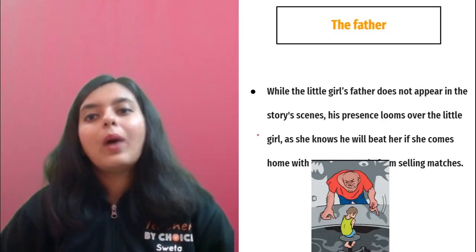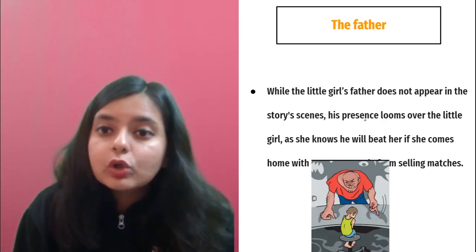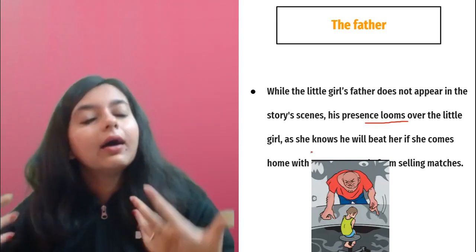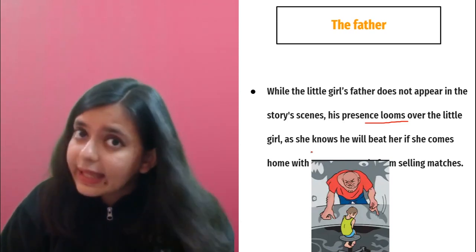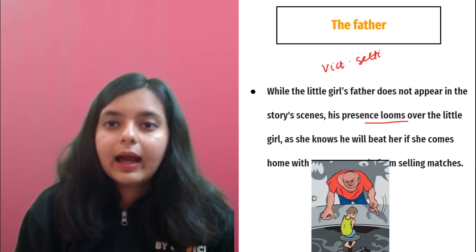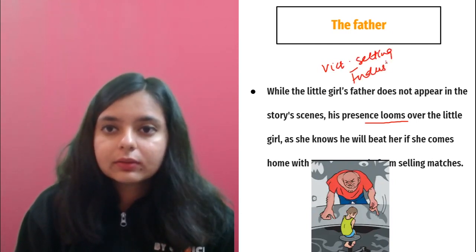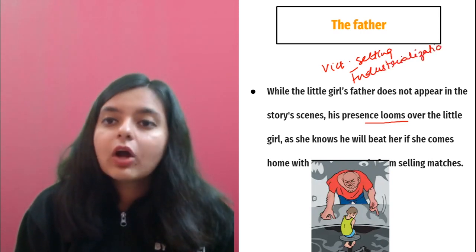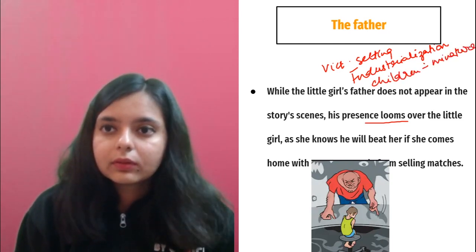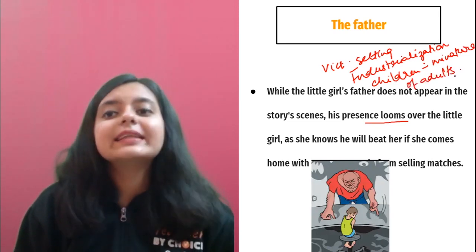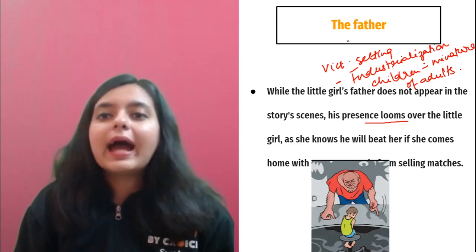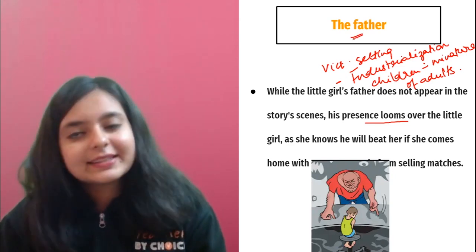Now we have the father. While the father does not appear in the story's scenes, his presence looms large over the little girl. He is the main reason that the little girl does not return home and succumbs to death — because if she returns home, she will succumb to cruelty there. She is afraid of her father. When discussing the father, talk about the Victorian setting, industrialization, and how children were treated as miniature adults during the Industrial Revolution.